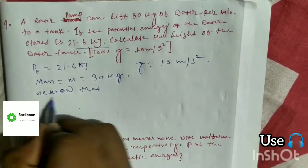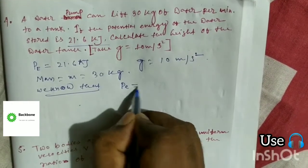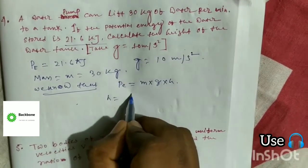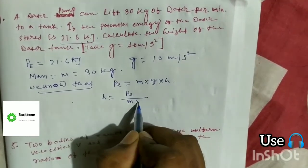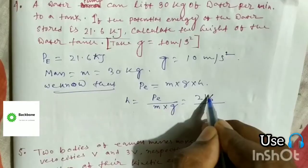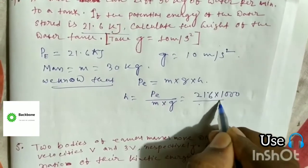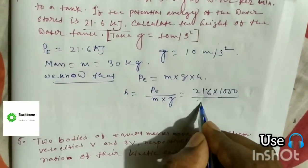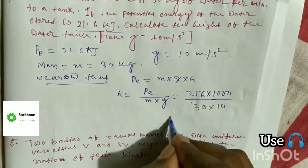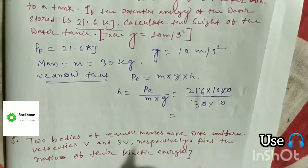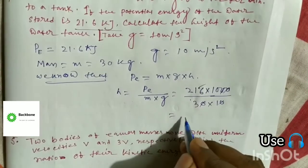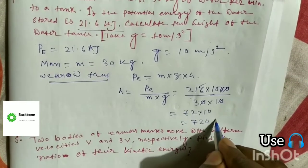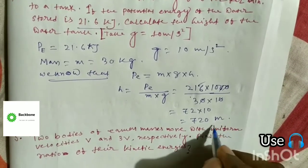We know that potential energy is equal to M into G into H. Therefore, H is equal to potential energy by M into G. Converting kJ to Joules: 21.6 times 1000 by 30 times 10 equals 72 meters. This is the answer.